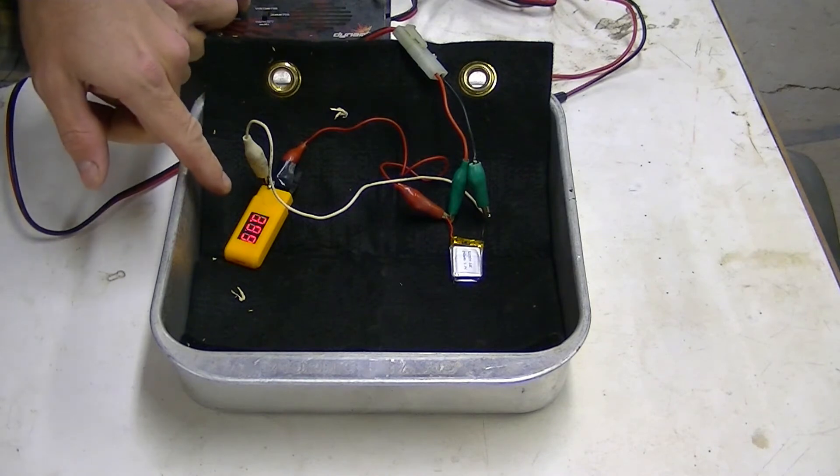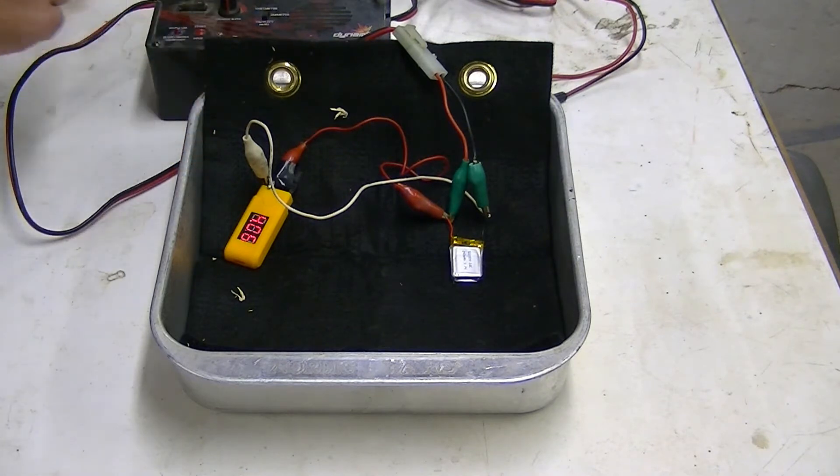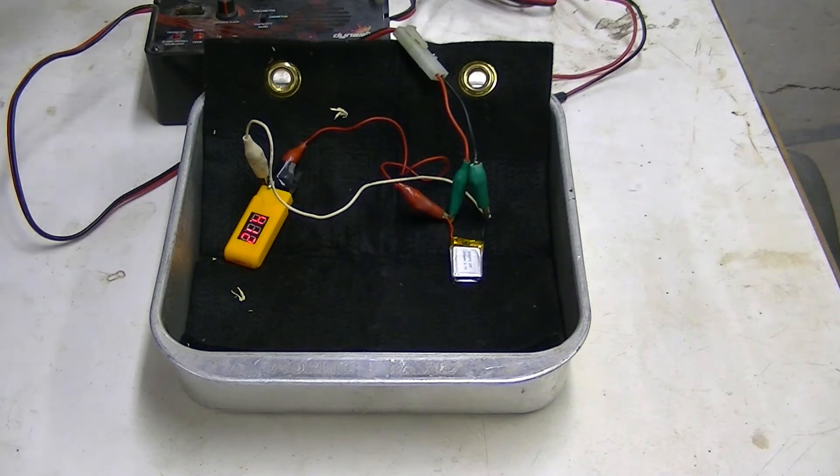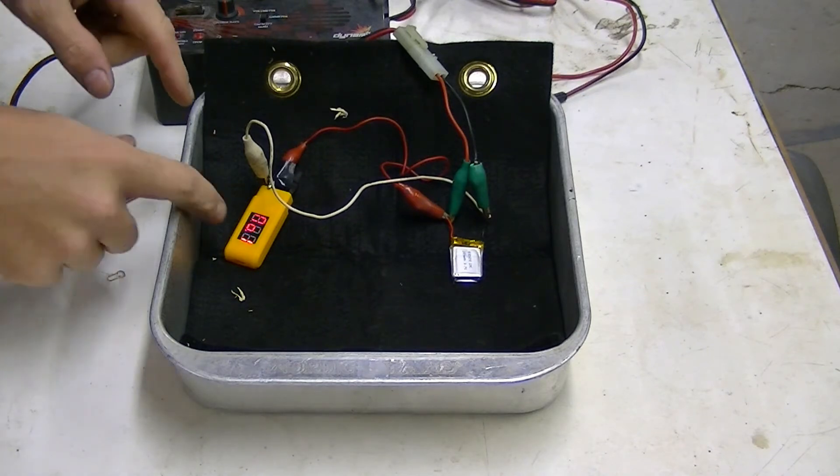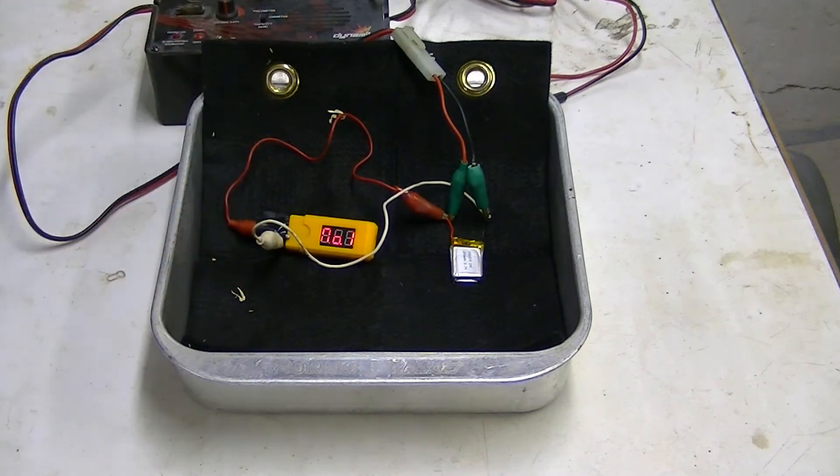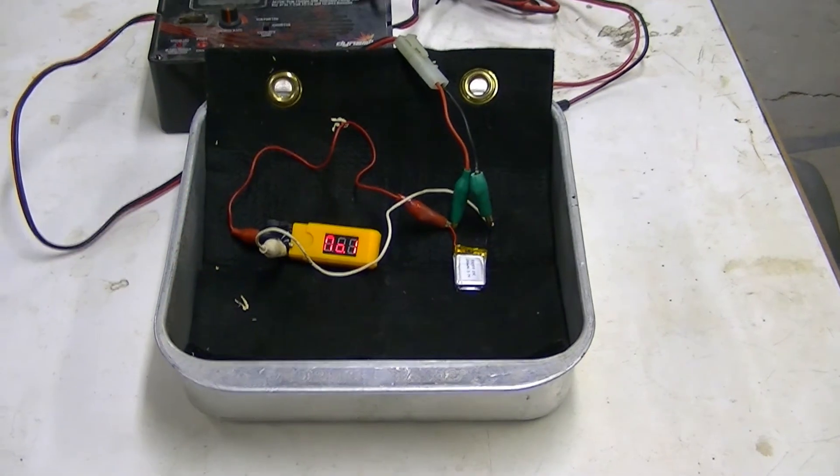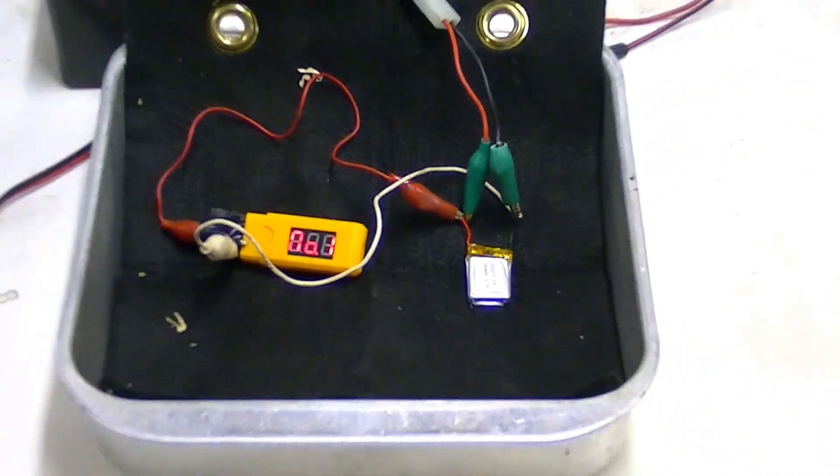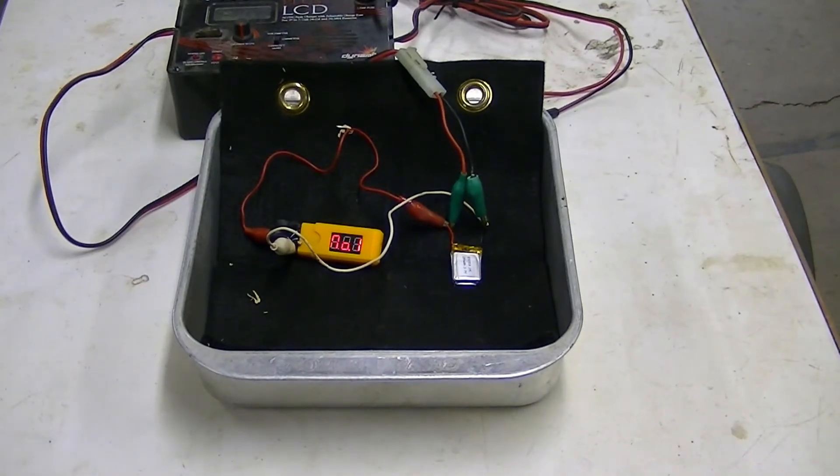Showing cell number one at 4.11 volts, 3.99, 3.99, 4.07, 4.12. Wow. That's as low as the charge rate will go. 2 milliamp hour. We'll let it sit there for a bit and monitor the voltage. If you can see that or not. 4.10, 4.09, 4.09, 4.09.